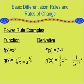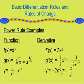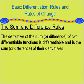This can be simplified as 1 over 3x to the 2/3. Lastly, y equals 1 over x squared can be rewritten as x to the negative 2. Therefore, y prime using the power rule is negative 2x to the negative 3, which can be rewritten as negative 2 over x cubed.